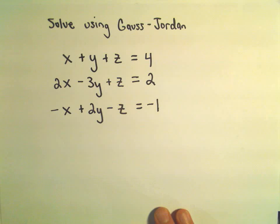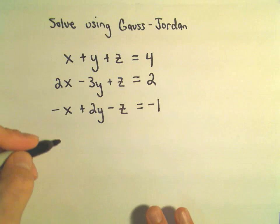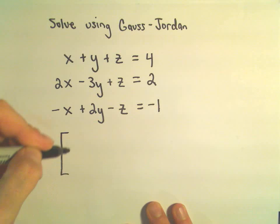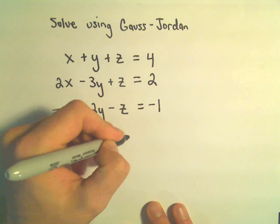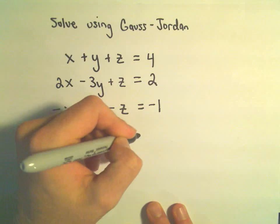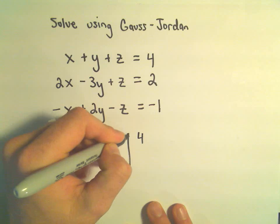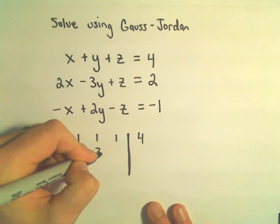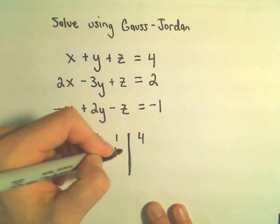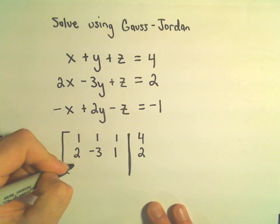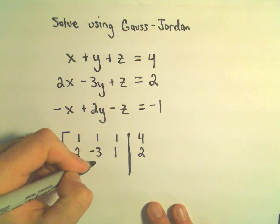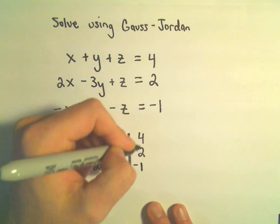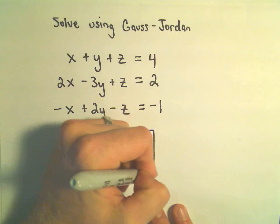The first thing I'm going to do is write my system as a matrix. So we have 1, 1, 1, and positive 4. We have a 2, a negative 3, a 1, and 2. And then we have negative 1, positive 2, negative 1, and negative 1.